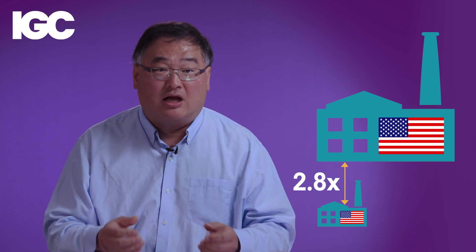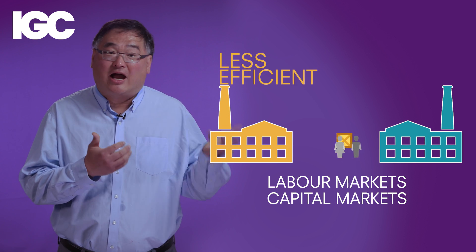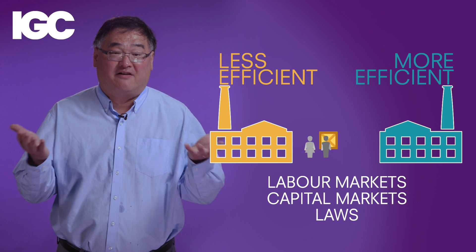If you were to look at the census of industrial firms in India and randomly pick two firms and measure the return to capital and the return to labor, the difference is roughly a factor of four. If you do the same exercise for two randomly picked firms in the US, you find there are some gaps, but they are typically much smaller. That fact suggests that US labor markets, capital markets, and laws are facilitating the flow of resources from firms that are not using resources efficiently to firms that are — and the large gaps in other countries suggest these markets are not operating in the same way.